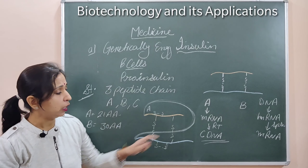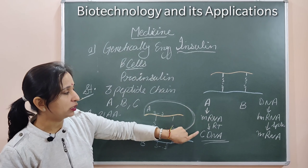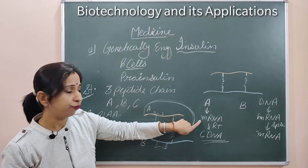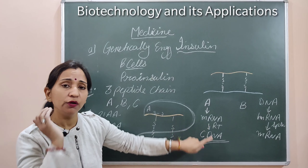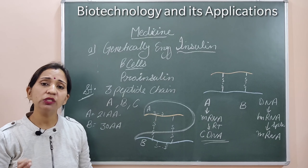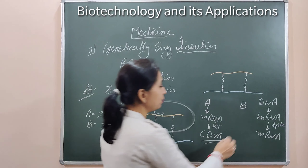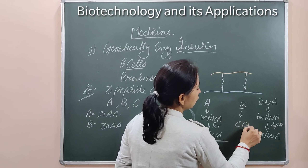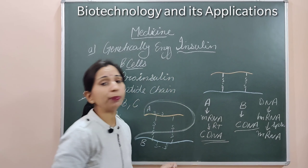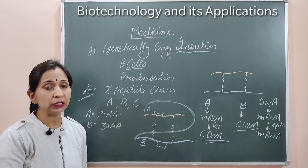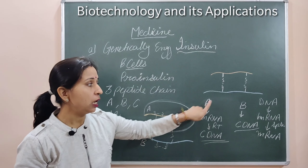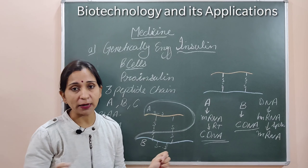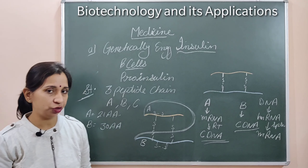The complementary DNA was formed using these steps: gene isolated, then transcription to form mRNA, and then using reverse transcriptase enzyme the cDNA was synthesized. Similarly, in the same way, cDNA was also formed for the B-chain.